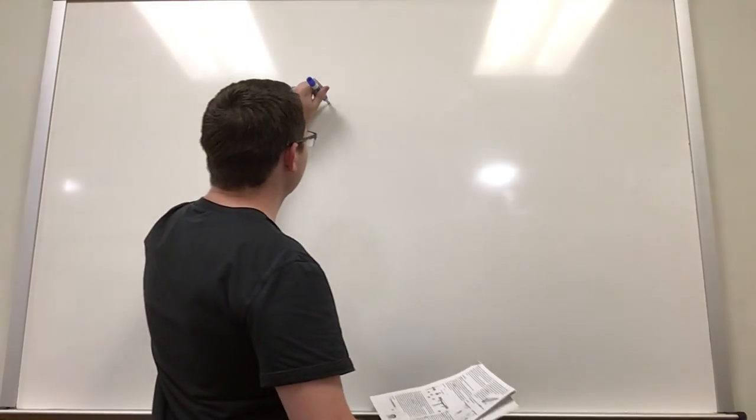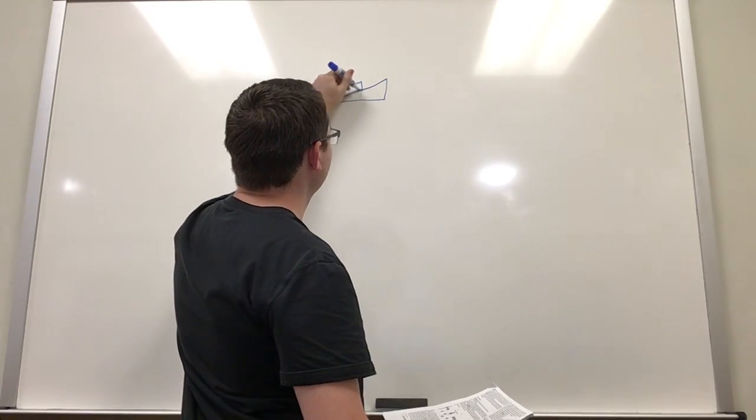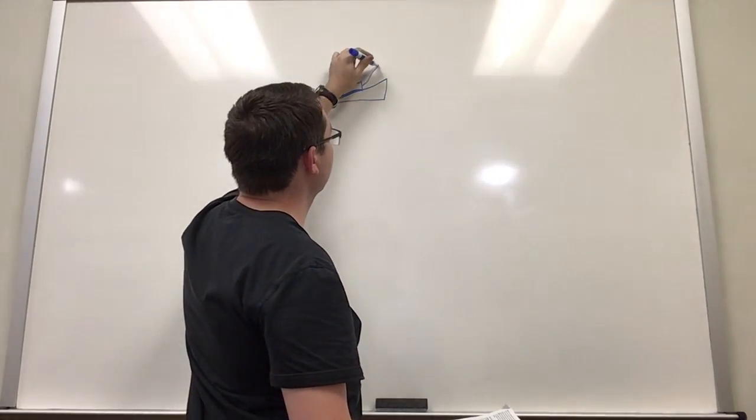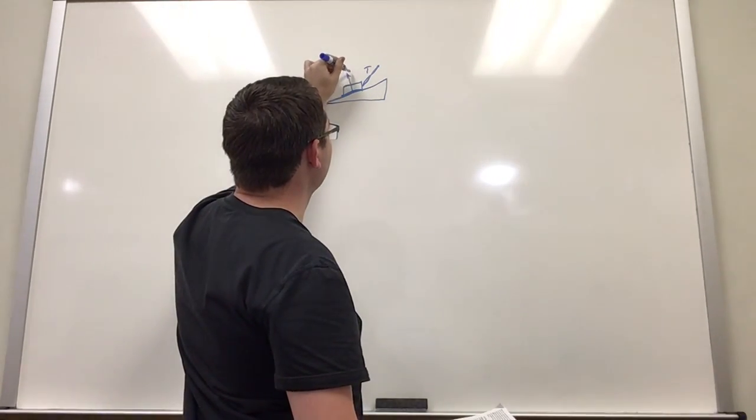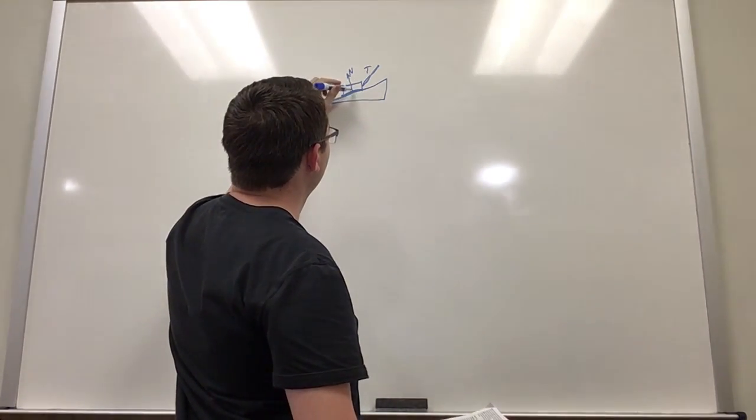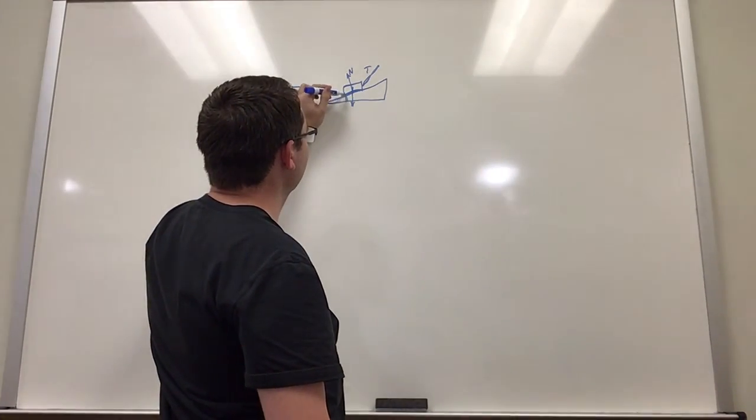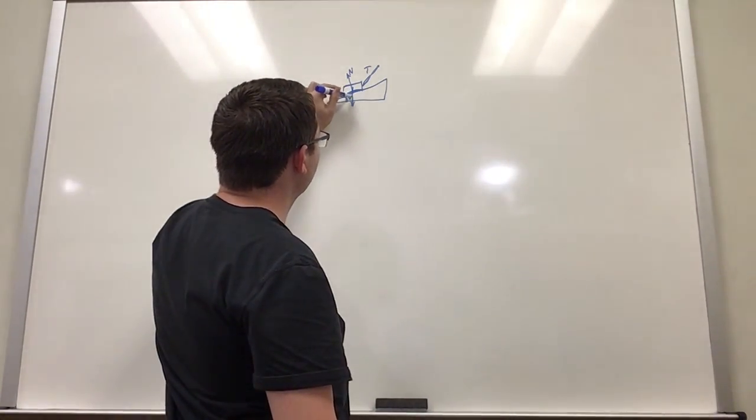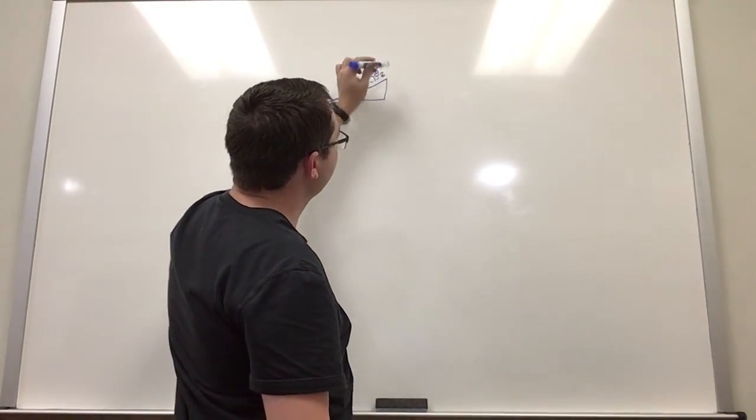So to have a drawing, we have a ramp with the car, and I'm representing it as a box, and then the cable that has a tension, we have a normal force, we have our weight vector, and then we have this other angle. So we have theta 1 and then theta 2.